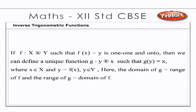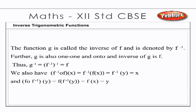If f from X to Y such that f(x) = y is one-to-one and onto, then we can define a unique function g from Y to X such that g(y) = x, where x ∈ X and y = f(x), y ∈ Y. Here the domain of g equals the range of f, and the range of g equals the domain of f.